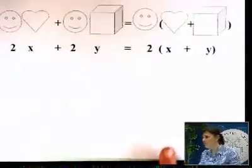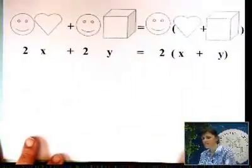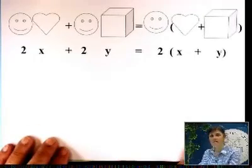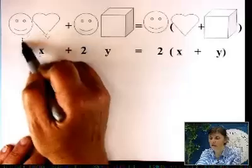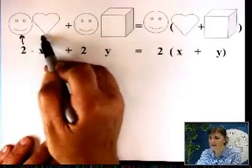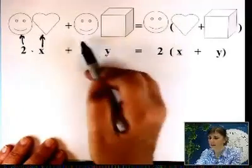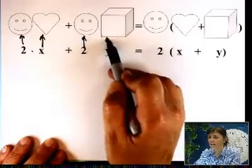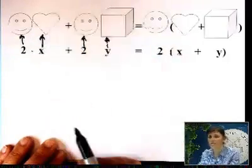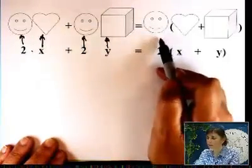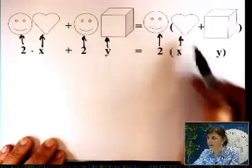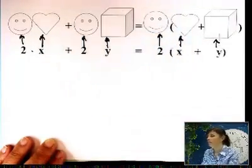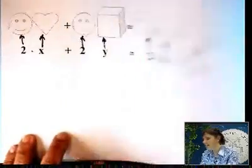So understand how the logic works. I actually make those things for you so that you can see it. If somebody says factor, so you have 2, this is like the smiley face, times x, like the heart. Plus 2, smiley face, Y, like the cube. These are two different shapes. You can pull the 2 out. Parentheses. You have the heart plus the cube.